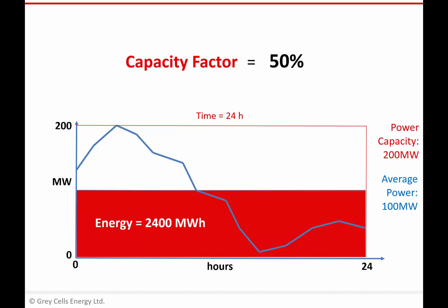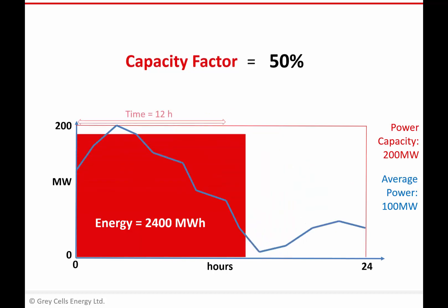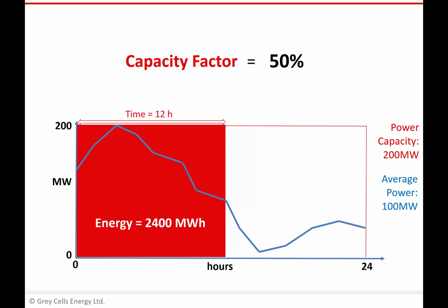Another way of thinking about this chart: how many hours would we need to operate the plant at its maximum capacity of 200 megawatts to produce that same 2400 megawatt hours of actual energy? The answer is 12 hours. So we could operate at 200 megawatts for just 12 hours rather than at 100 megawatts for 24 hours. The capacity factor can therefore also be expressed as 12 hours divided by 24 hours. These 12 hours are what we call full load hours — the equivalent number of hours the plant would need to run at maximum capacity to produce the actual energy output.